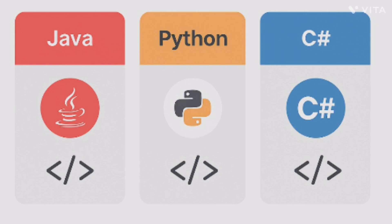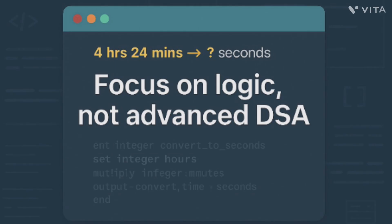If you don't select a cluster, Java is assigned by default, so most candidates will land in the Java cluster. Cluster allotment depends purely on the Cognizant team. Each cluster gives two coding problems — one will be easy and the second is medium level. The problems usually involve strings, numbers, and basic mathematical operations, so don't expect heavy data structures and algorithms.